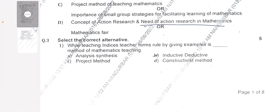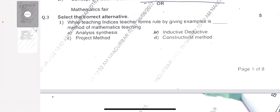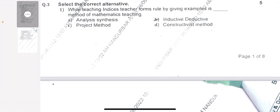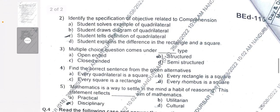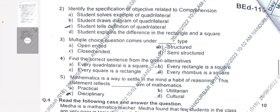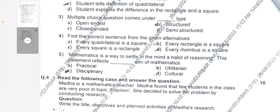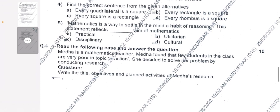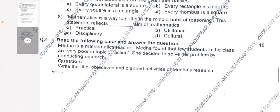Question Number 3 is optional, MCQ-based — you have to choose one answer among four. First question: which teaching method does a teacher use when forming a rule by giving examples? Options are: inductive, project, or constructive method. Second: identify the specification of the objective related to comprehension. Third: multiple choice questions come under which type of category — open, closed, structured, or semi-structured? Fourth: find the correct sentence from the given alternatives. Fifth: 'Mathematics is a way to settle in the mind a habit of reasoning' — this statement reflects which aim of mathematics: practical, disciplinary, utilitarian, or cultural?